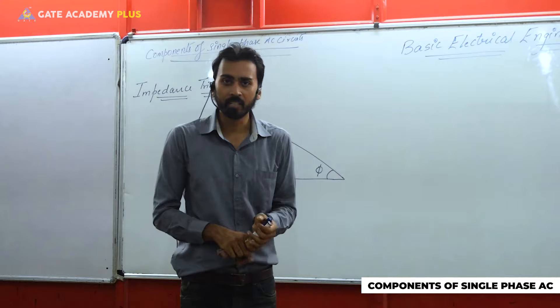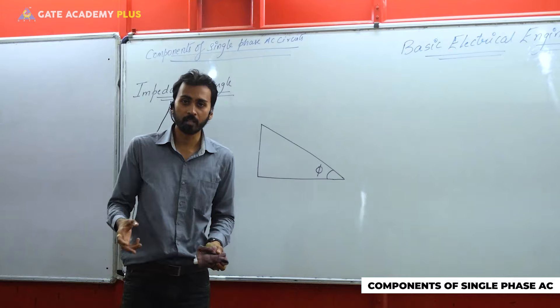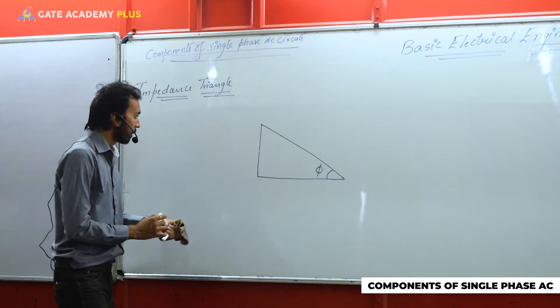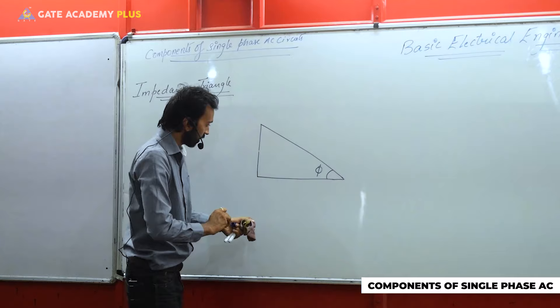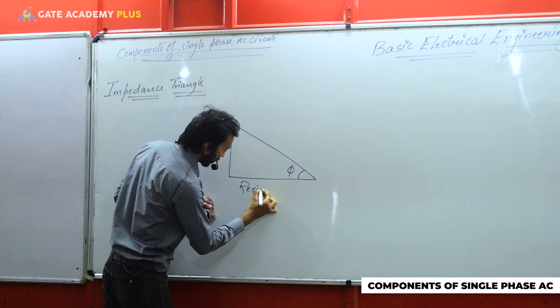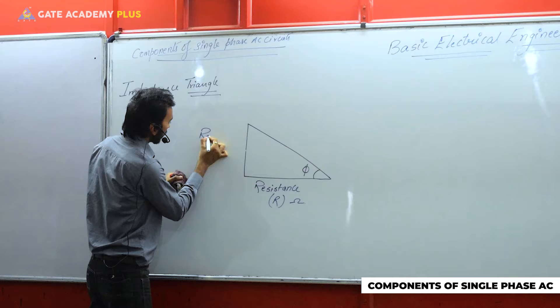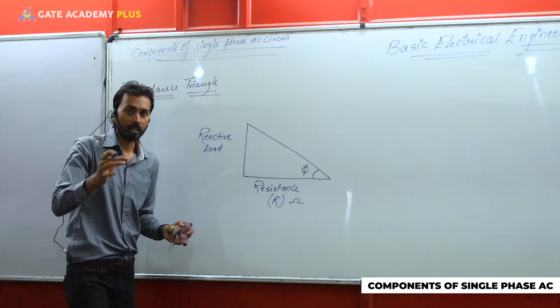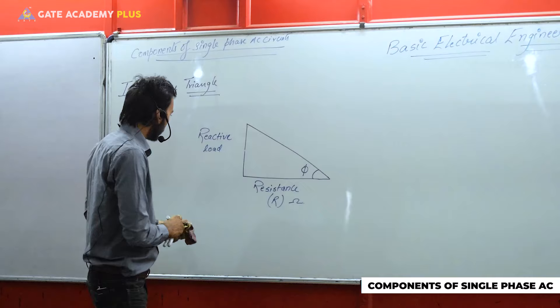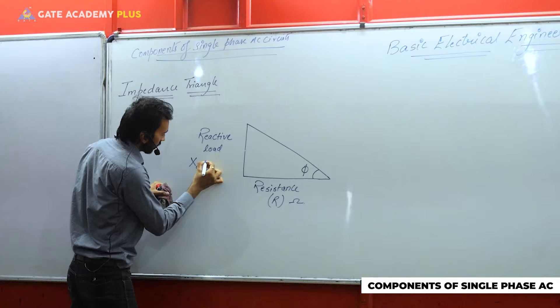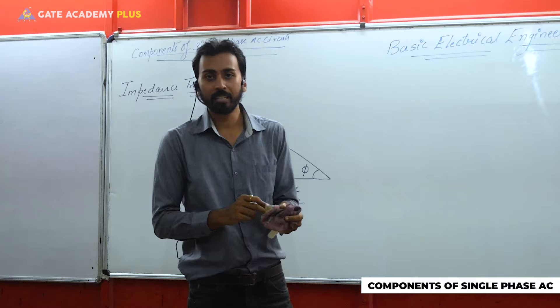We express the impedance triangle with the resistance R (unit: ohms) expressed on the base section. Then the reactive load or reactive part available in the circuit is given on the perpendicular section. So reactive load or reactive parts — either we can have Xc or we can have Xl.